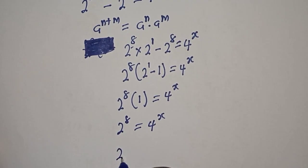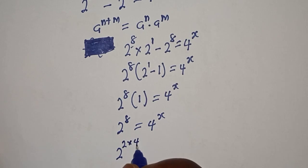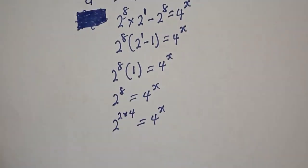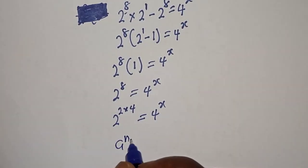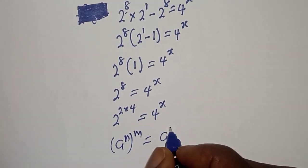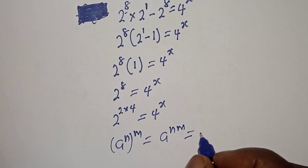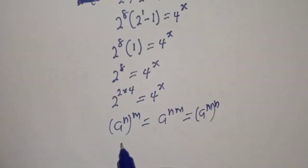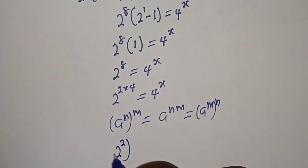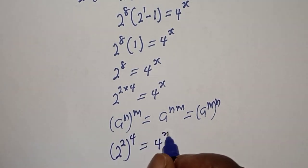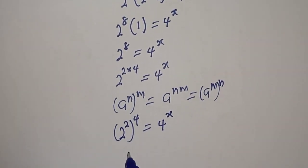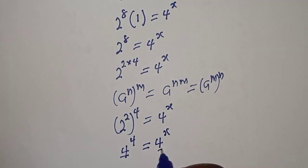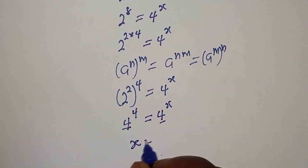2 raised to power 8 can be written as 2 raised to power 2 times 4, is equal to 4 raised to power s. Take note of this exponential rule: a raised to power n to the power of m is equal to a raised to power n times m, which is equal to a raised to power m to the power of n. Then this can be written as 2 raised to power 2, raised to power 4, is equal to 4 raised to power s. Then 2 raised to power 2 is 4, so 4 raised to power 4 is equal to 4 raised to power s. They have the same base 4, therefore s is equal to 4.